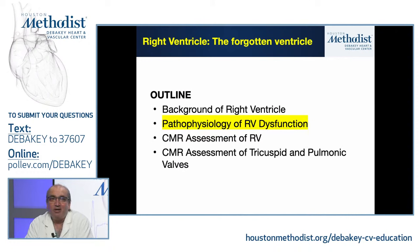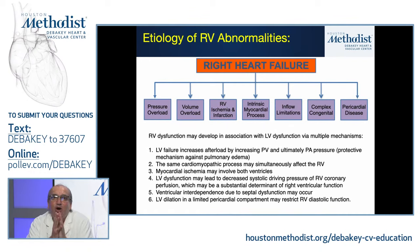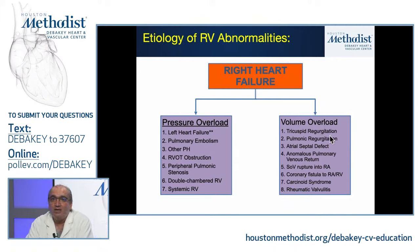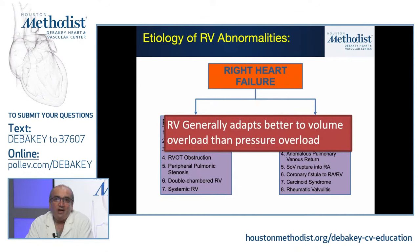Causes of right heart failure in clinical practice are multifactorial. The two primary pathological categories are pressure overload — most commonly due to left-sided heart failure, but also pulmonary embolism, pulmonary hypertension, and congenital conditions — and volume overload, primarily from right-sided valve regurgitation or congenital heart defects causing excess volume on the right side. In general, the RV adapts better to volume overload than to pressure overload physiology.